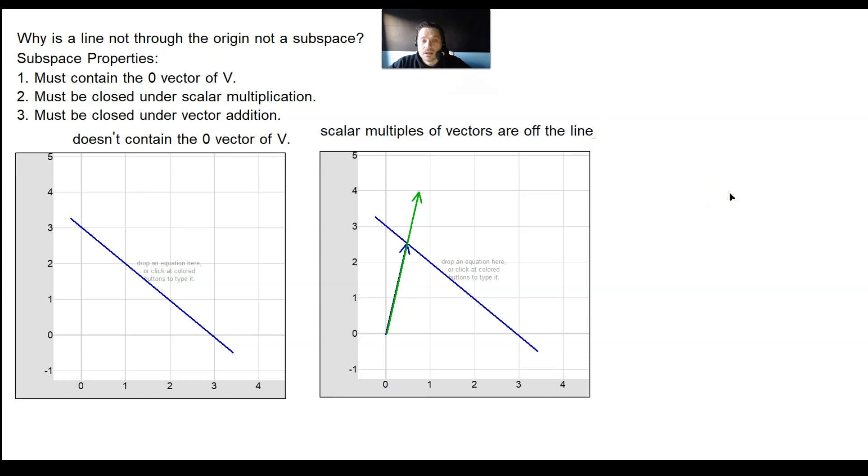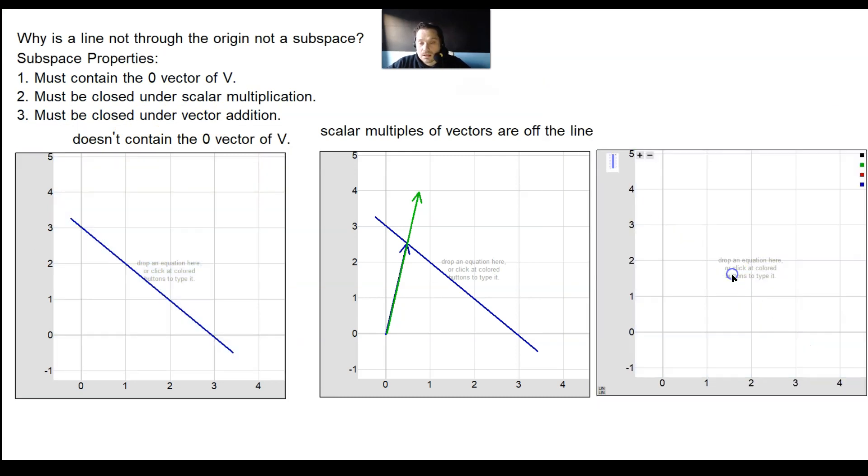And the last property that it violates is the one that says must be closed under vector addition. So what I'm going to do is, again, I'm going to take this, I'm going to paste this over here, and let's look at that last part of it. It must be closed under vector addition.